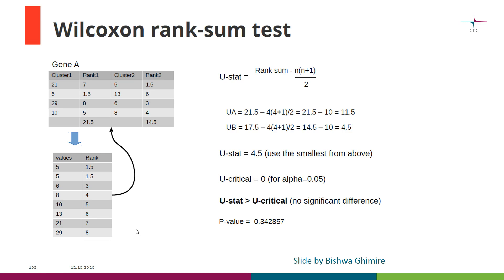To remind you how the default method, the Wilcoxon rank sum test, works: we have expression values for one gene, gene A, in cluster one and cluster two. We take these expression values and put them in a table in increasing order, then we give ranks. If two expression values are the same, we don't rank them one and two — both get one and a half. It is this kind of tied situation that can make it hard for Wilcoxon if there are many of them.